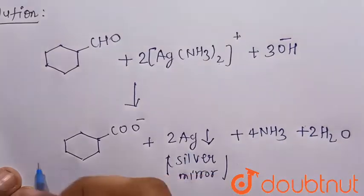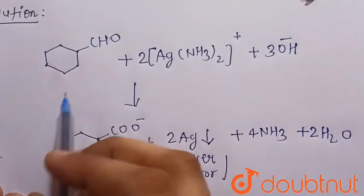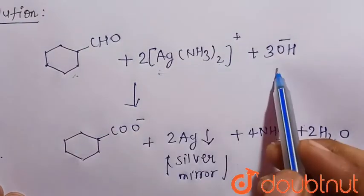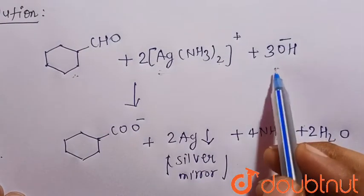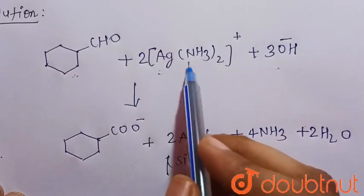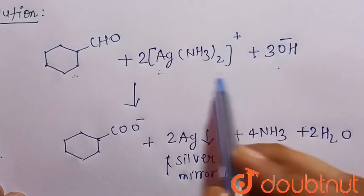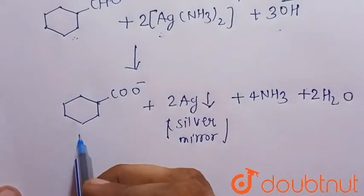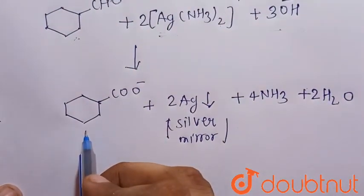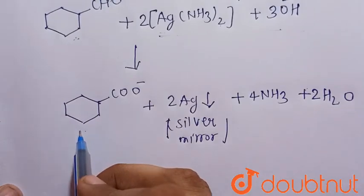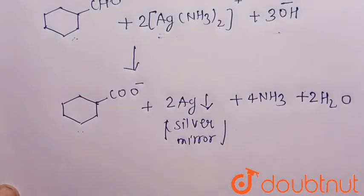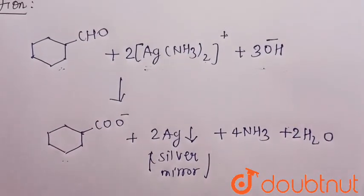So this is the required balanced chemical equation when cyclohexane carbaldehyde reacts with the Tollen's reagent. This is the complete Tollen's reagent - when combined, Ag(NH3)2+ with OH-. So there is formation of the cyclohexane carboxylate ion and silver mirror, and side products ammonia and water are also formed. This is the required balanced chemical equation.